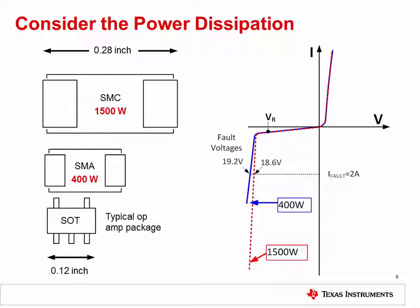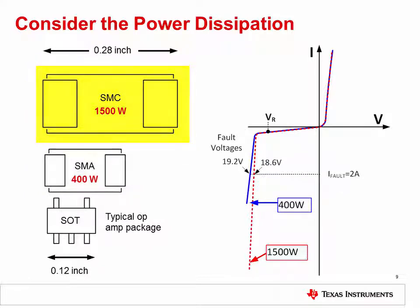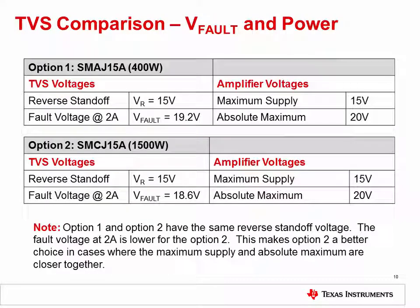However, there is a disadvantage to high power TVS diodes — they are actually quite large compared to most op amp packages. The diagram on the left compares the size of an op amp in a 5-pin SOT package, a 400 watt TVS in an SMA package, and a 1500 watt TVS in an SMC package. Comparing the results for TVS diodes with different power ratings, we clearly see that the fault voltage is significantly lower for the higher power TVS diode. In this case, both options will protect against EOS because the fault voltage is lower than the absolute maximum of the op amp. However, the higher power option has additional margin, and if operating conditions were closer to the absolute maximum conditions, this might be the only option.